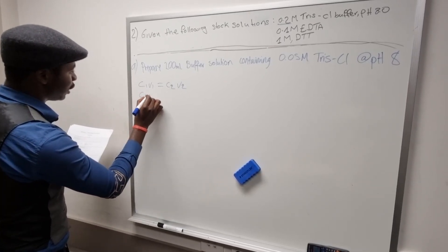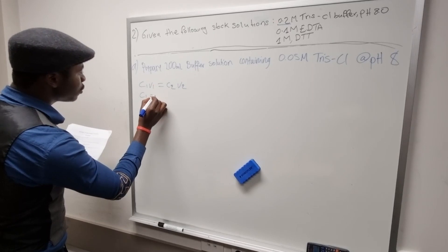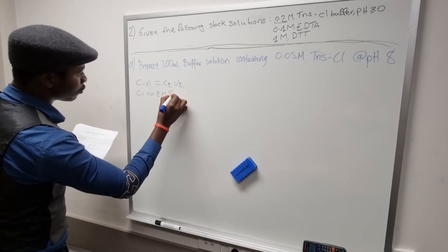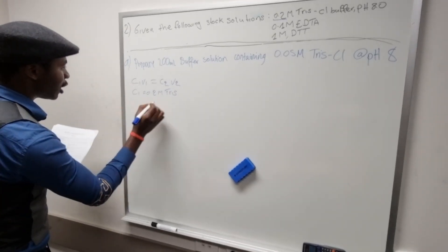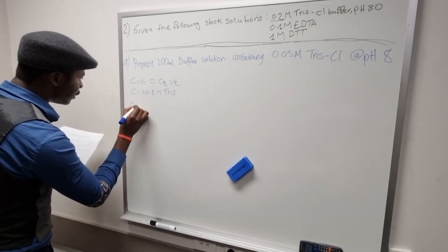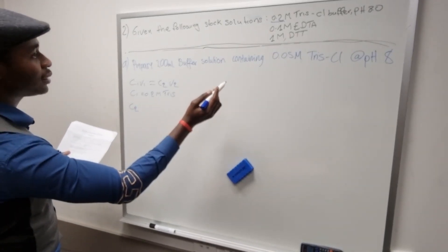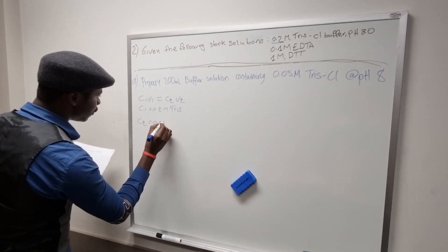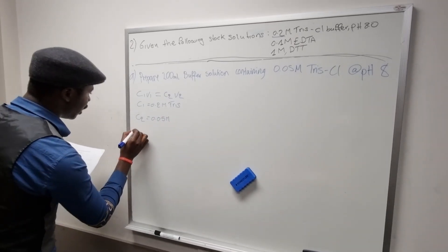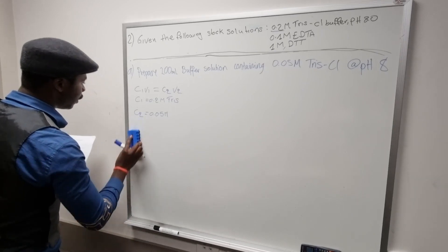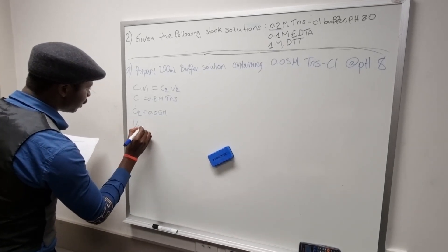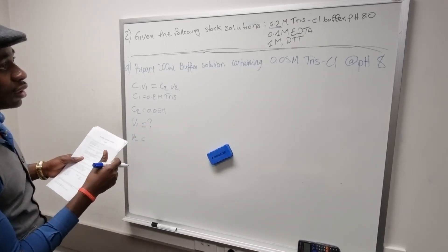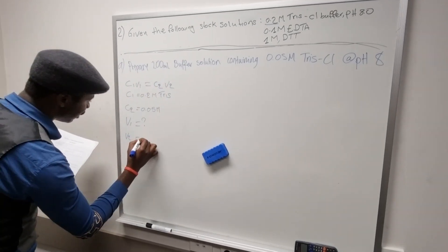We know that C1 is equal to 0.2 molar Tris. Our C2 is given as 0.05 molar. V1 is what we are looking for — it is not given. And V2 is given as 200 milliliters.